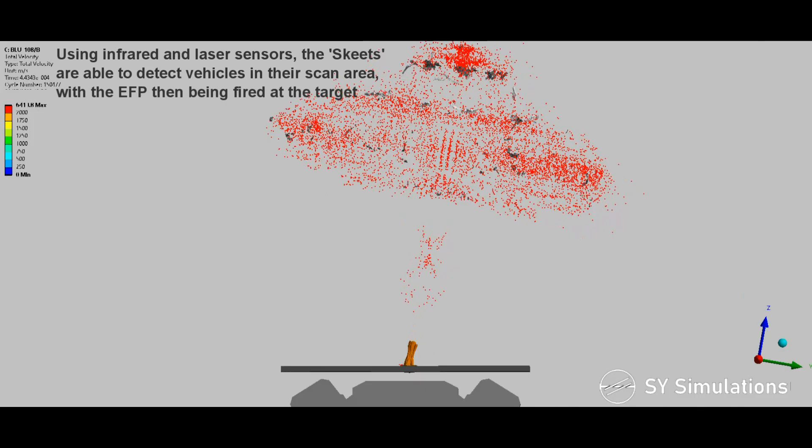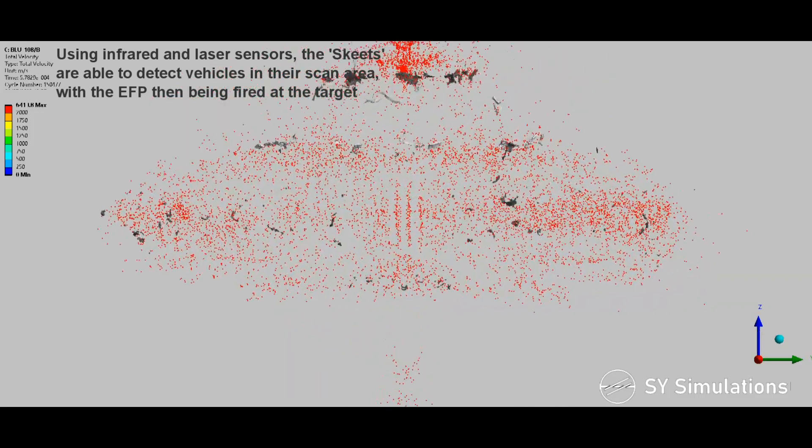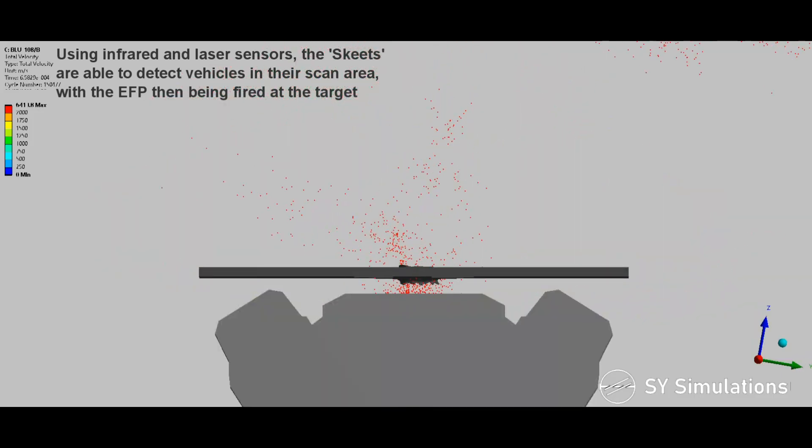Using infrared and laser sensors, the skeets are able to detect vehicles in their scan area, with the EFP then being fired at the target.